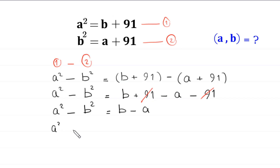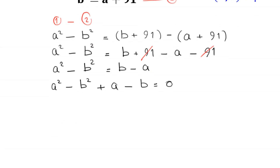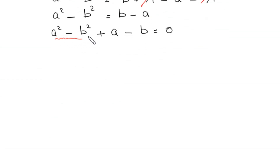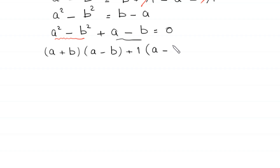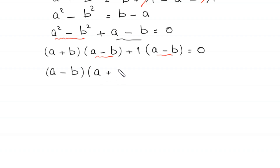Next, we take a squared minus b squared and move the negative a to the left hand side — it becomes plus a — and this b becomes negative b on the left hand side, equal to 0. Now, a squared minus b squared becomes (a plus b)(a minus b), and from the remaining two terms we factor out plus 1, leaving (a minus b) equal to 0 in bracket.